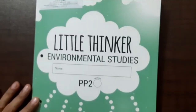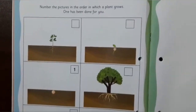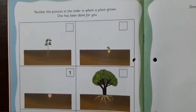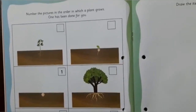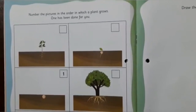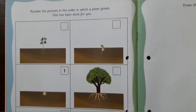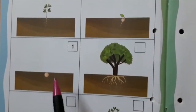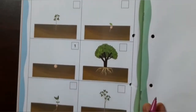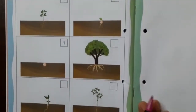Let's start. Let's open Little Thinker Environmental Studies, page number 10. Here children, you are going to arrange the pictures and give them numbers as per their sequence. Number the pictures in the order in which a plant grows. Number one has been done for you — you can see the seed.